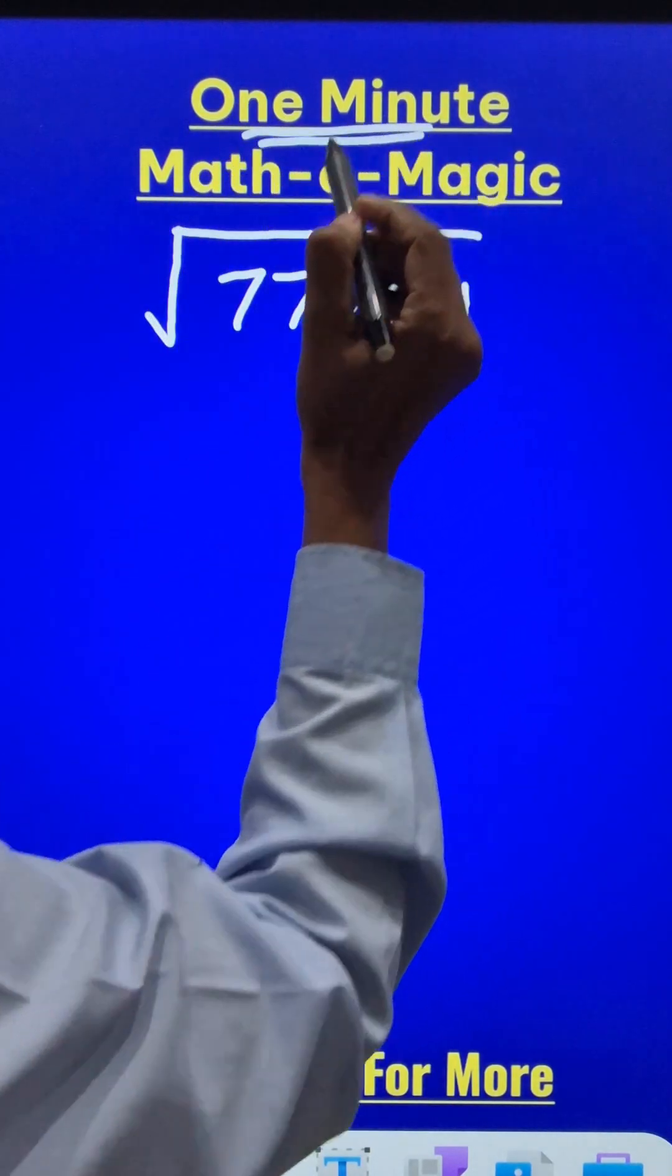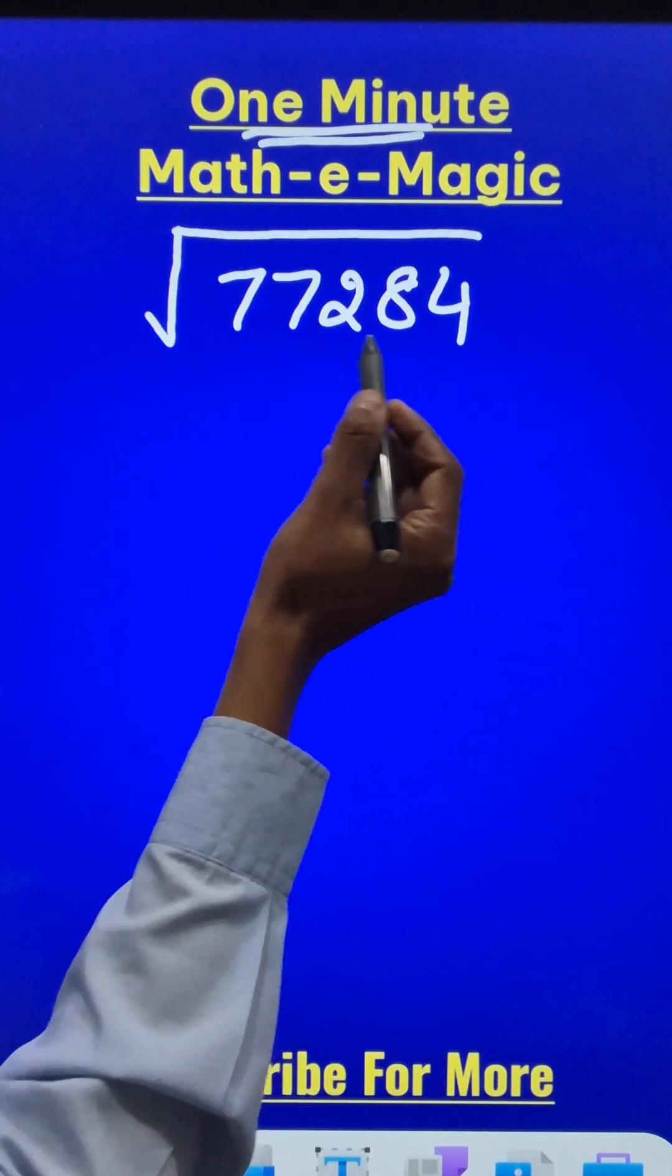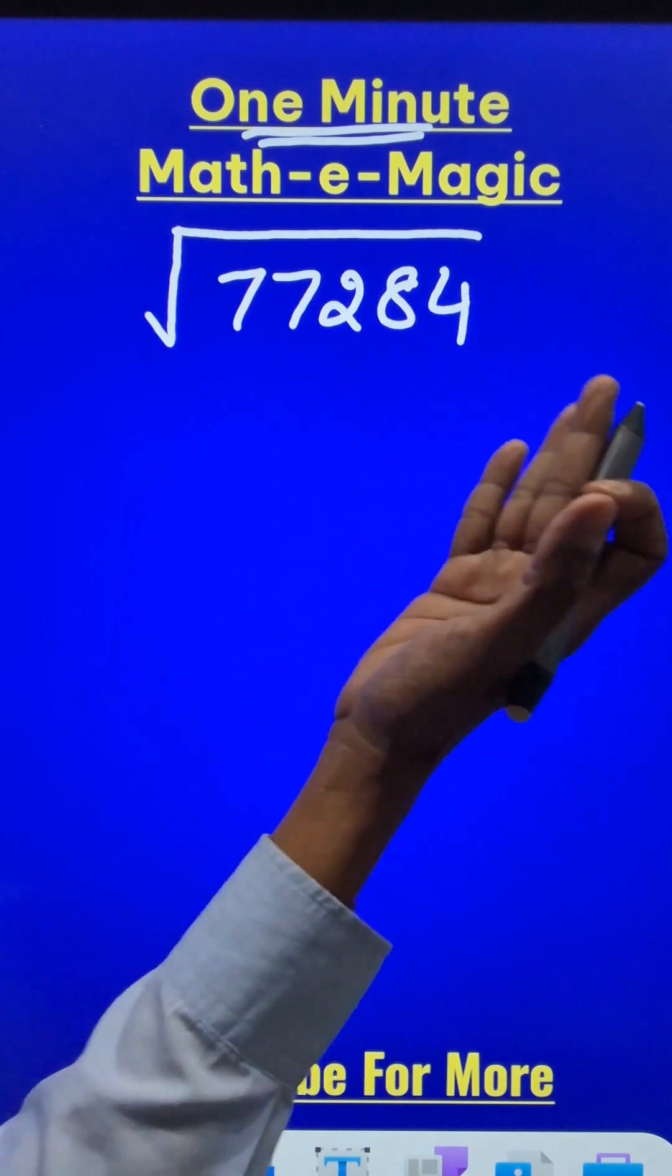Here is a one minute short trick for finding the square root of a big number like 77284, a five digit number.